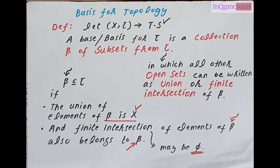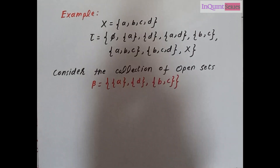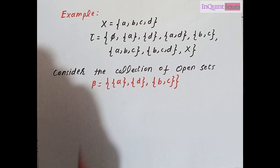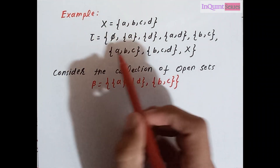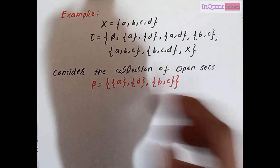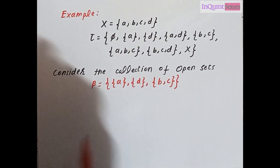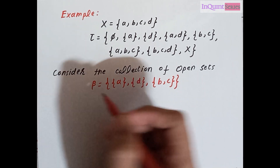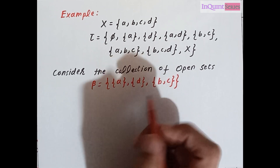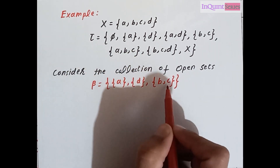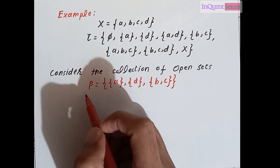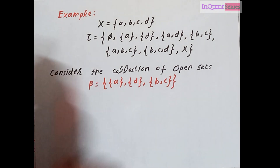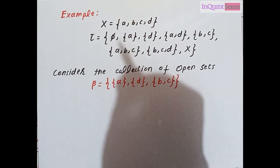Now let's move towards examples. Here we have x equal to {a, b, c, d} and we define our topology on x as {phi, {a}, {d}, and so on}. Consider the collection beta of open sets whose elements are {a}, {d}, and {b, c}. We can now check whether this beta forms a basis for that topology.